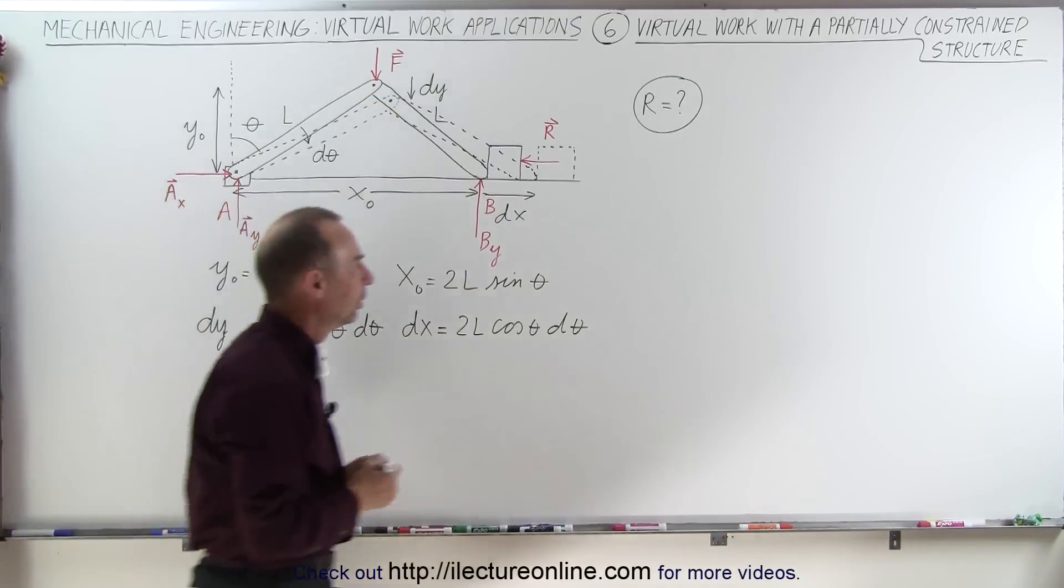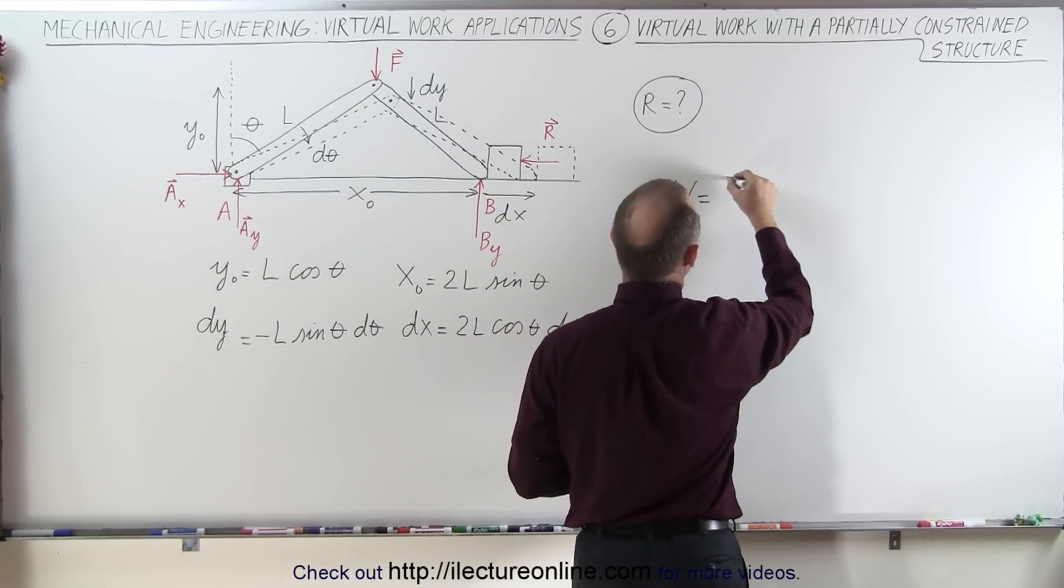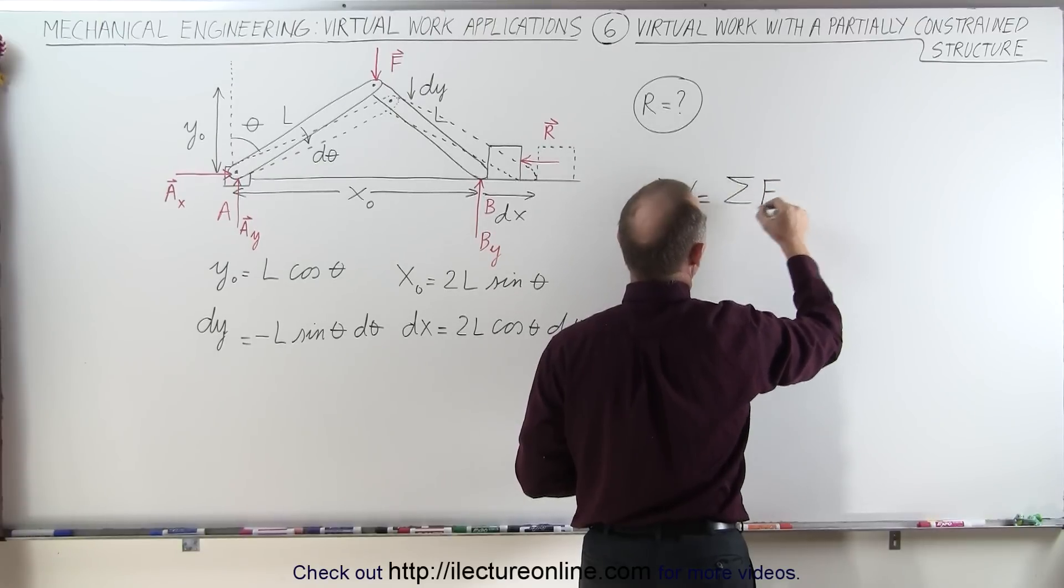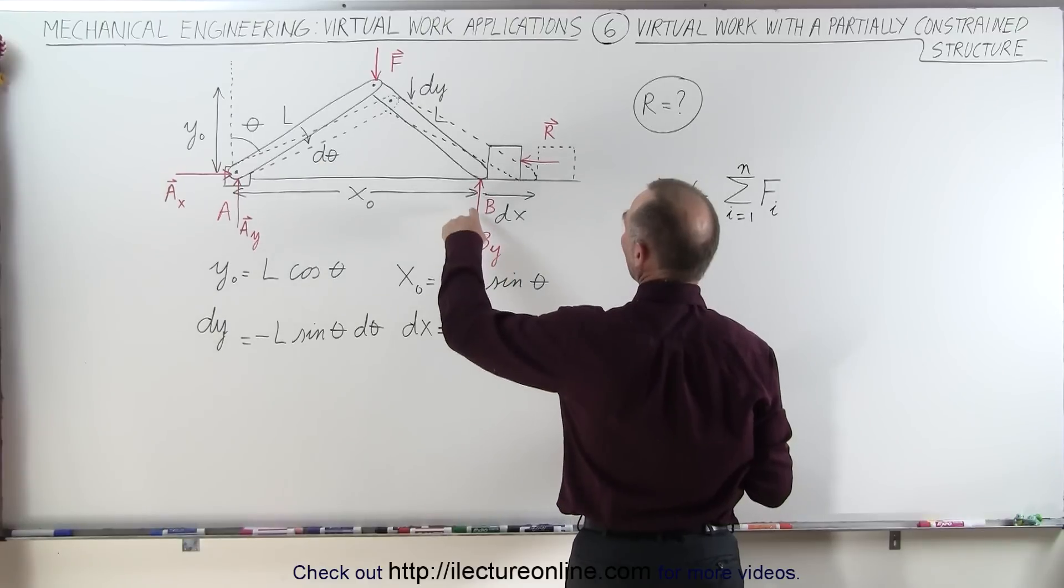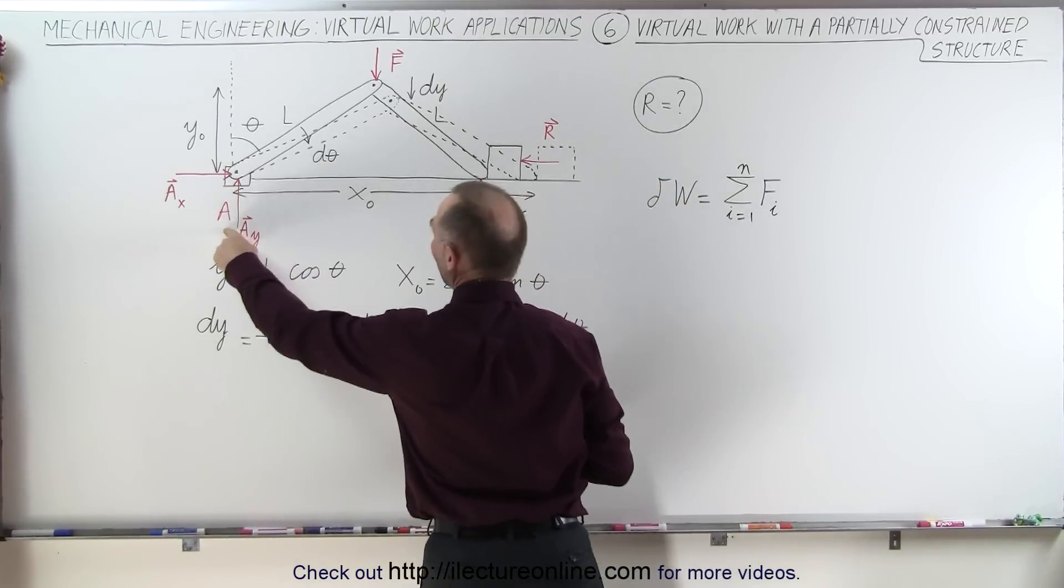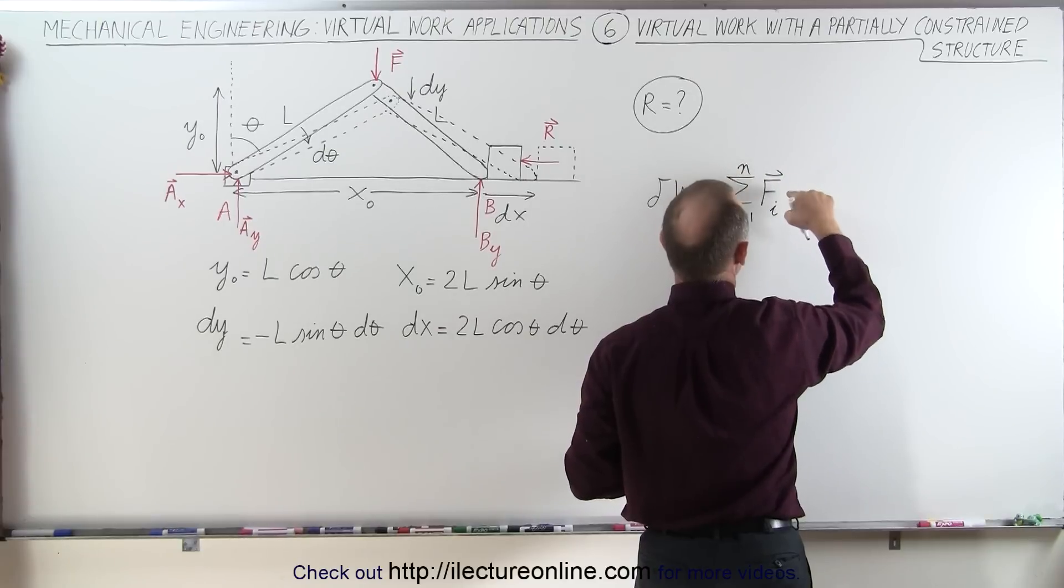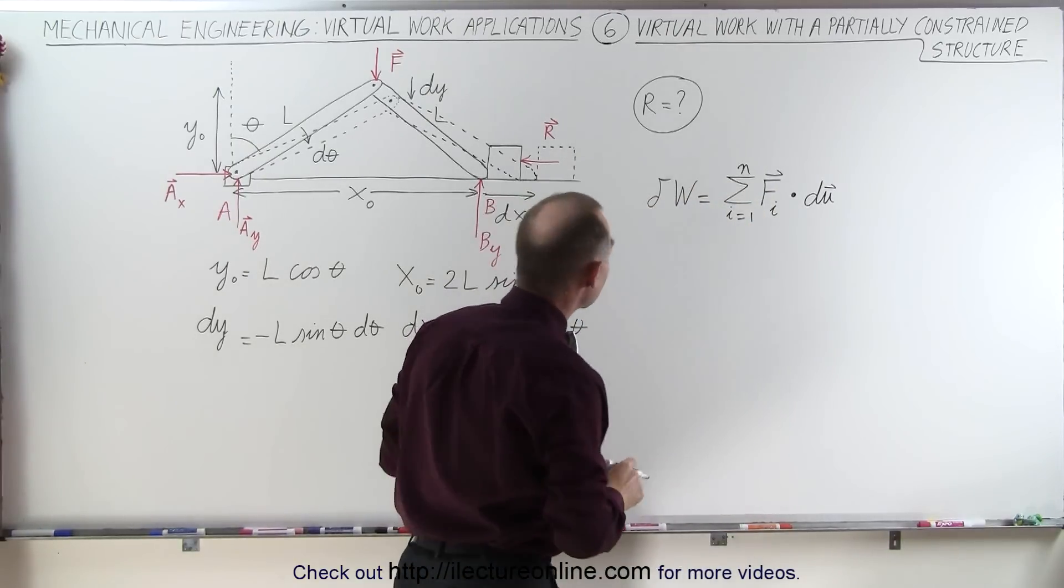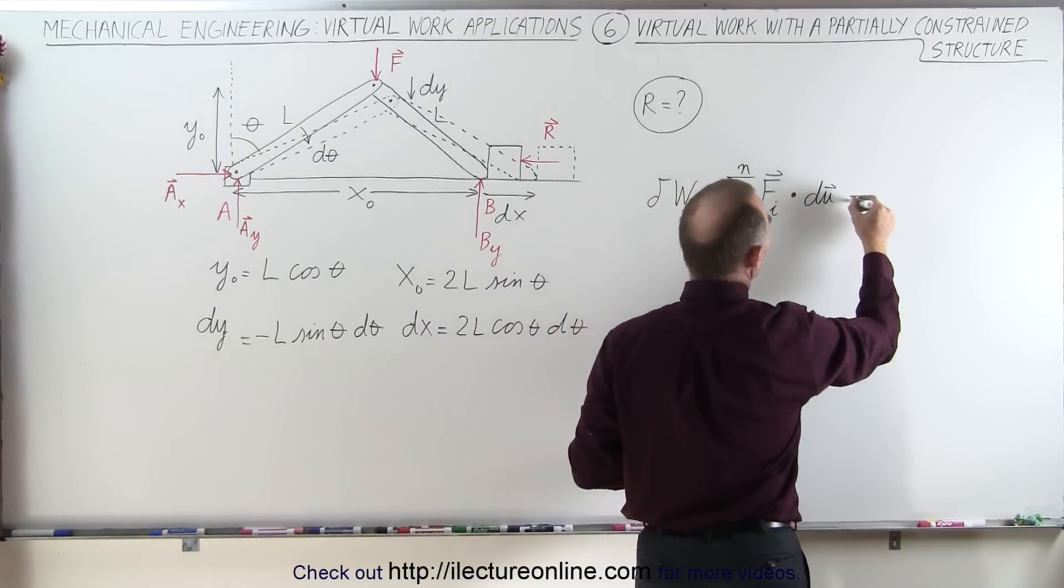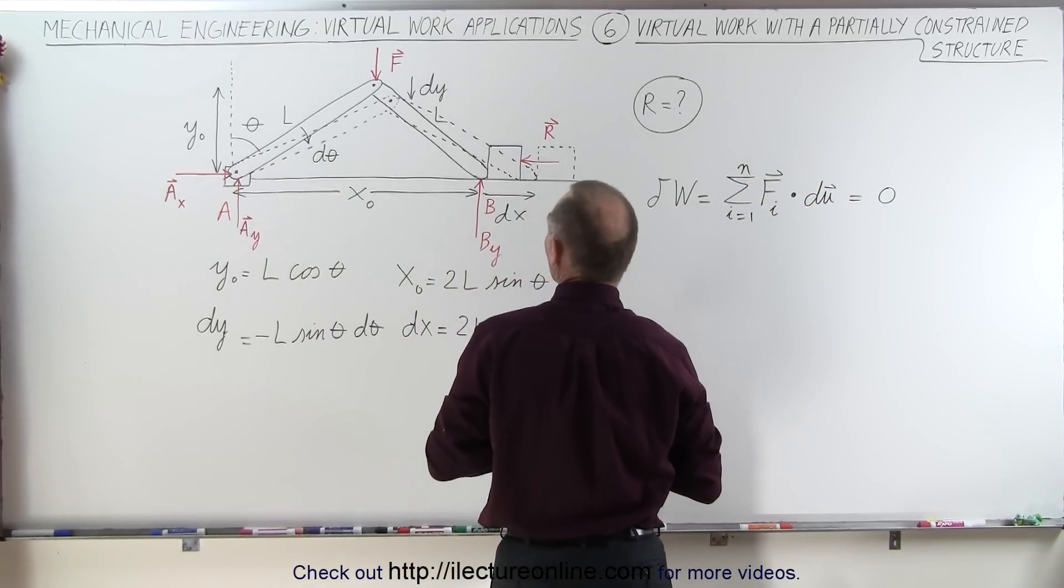So for that we're going to use virtual work. We can say that the virtual work done is equal to the sum of all the forces from I equals 1 to N. In this case there's only two forces at play, B doesn't do any virtual work, neither does A sub X and A sub Y, only R and F do virtual work. So it's going to be the product of the forces multiplied times the du's. Of course it's a dot product, so we do have to take into account the directions of those. And we know that that is going to be equal to zero because the structure here is in equilibrium.